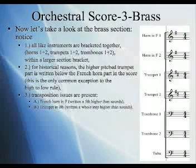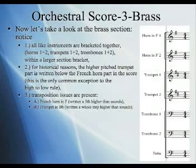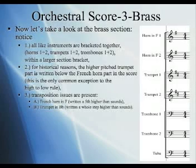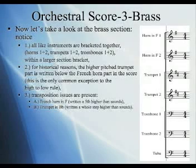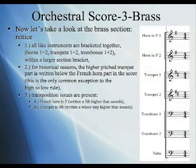Going on to the brass section: all like instruments are bracketed together — horns one and two, trumpets one and two, trombones one and two — all within a larger brass section bracket. For historical reasons, the higher-pitched trumpet part is written below the French horn part in the score. This is the only common exception to the high-to-low rule. The French horn used to be part of the woodwind section in Mozart symphonies, and so it's still listed above the trumpet part for that reason.